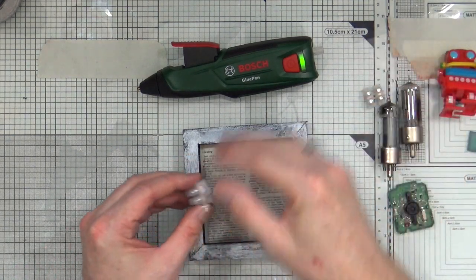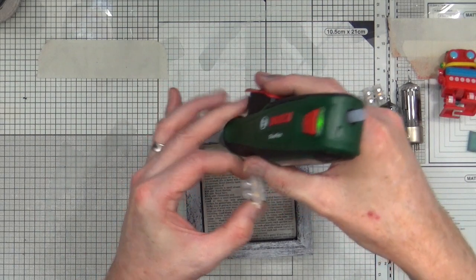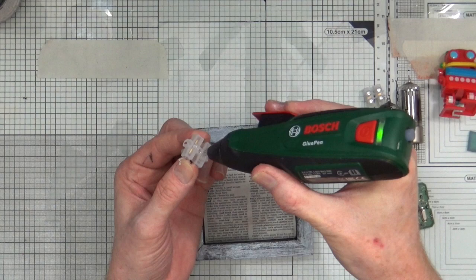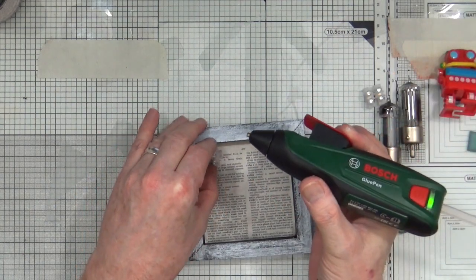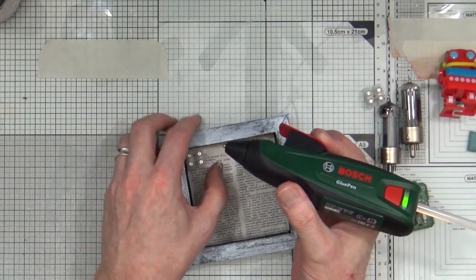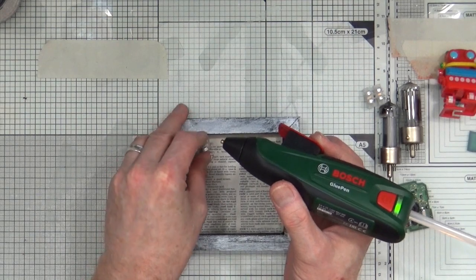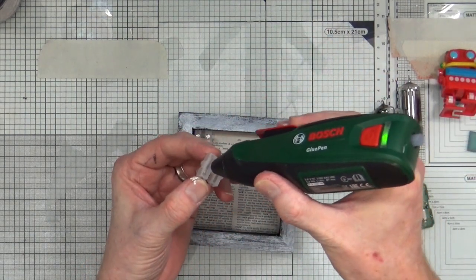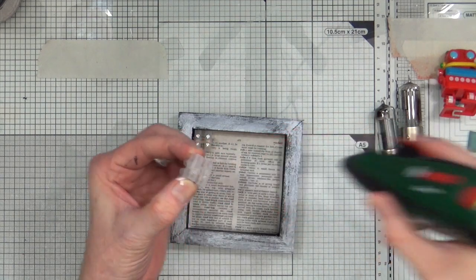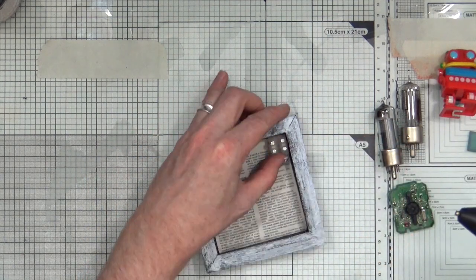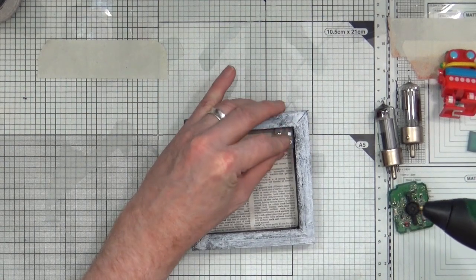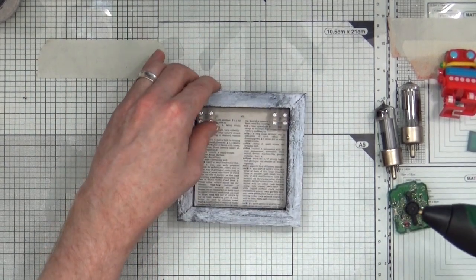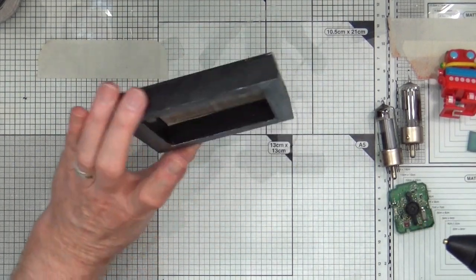So to start off with, I'm going to glue in the pieces for the junction box. So they're going to go in first, so right up into the corner. Don't need a huge amount of this glue. Perfect.